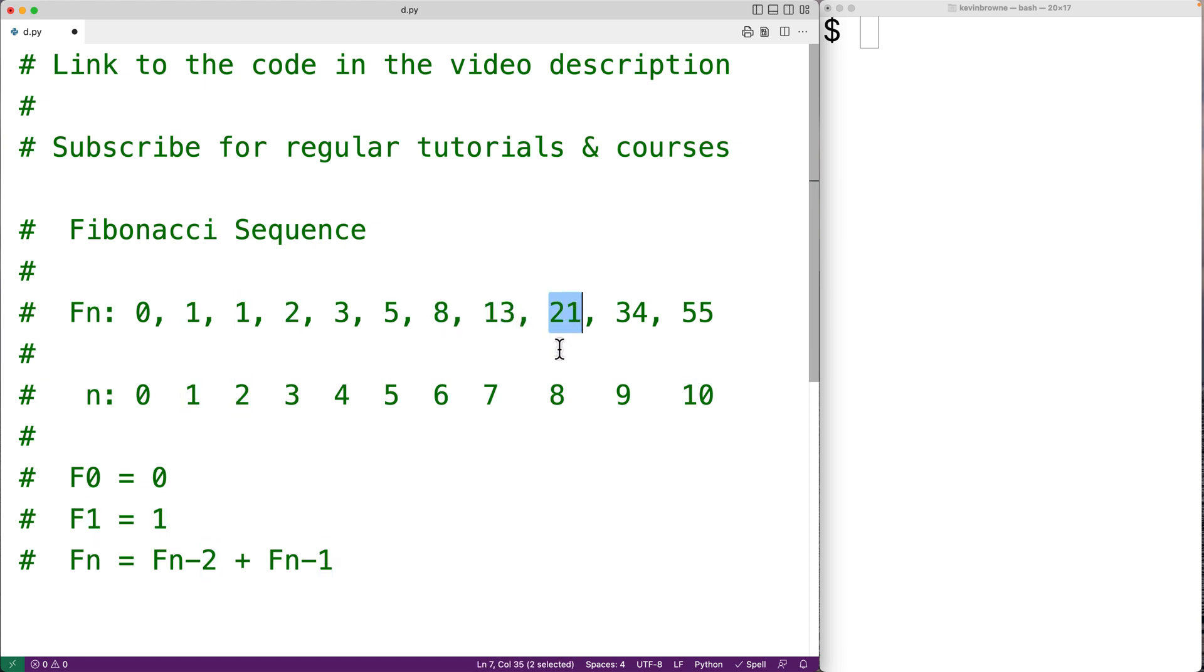You'll notice that each number in the sequence is the sum of the two previous numbers. So for example, 21 here is the sum of 13 and 8, and 13 here is the sum of 8 and 5.